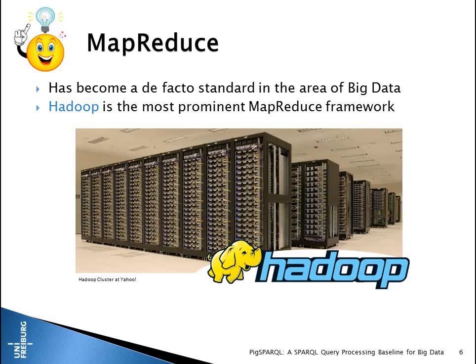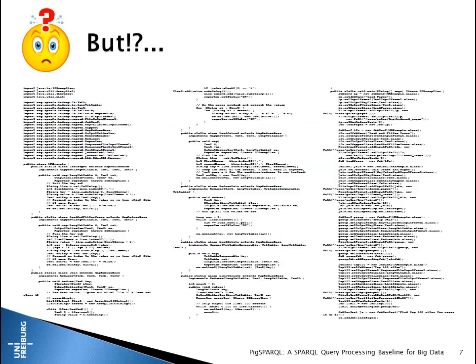In the area of big data, MapReduce has become one of the de facto standards in recent years, with Hadoop being the most prominent ecosystem. That's why we want to place our system on top of Hadoop. But if you look more carefully at MapReduce and Hadoop, you see that MapReduce means writing a lot of code — especially Java code — and you have to reinvent the wheel because common operations like filters and joins do not exist out of the box.